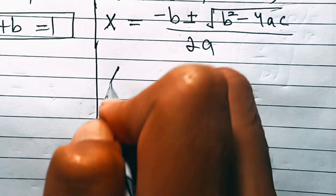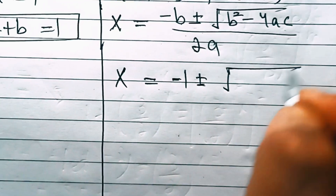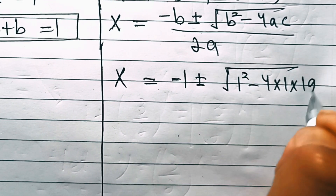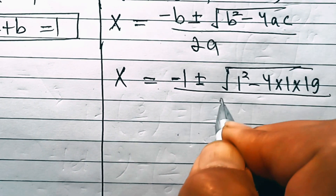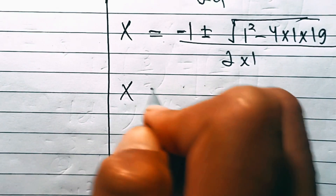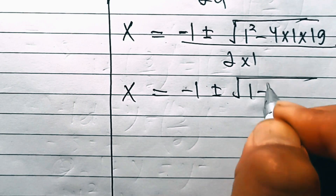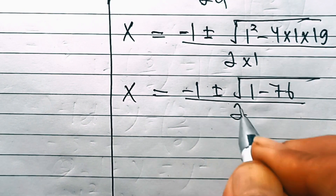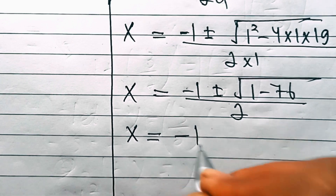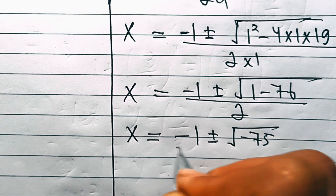This implies x equals minus 1 plus or minus the square root of (1 minus 4 times 1 times 19) over 2 times 1, which gives x equals minus 1 plus or minus the square root of minus 75, all over 2.